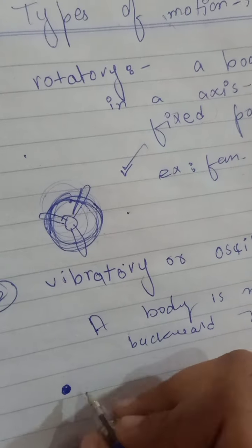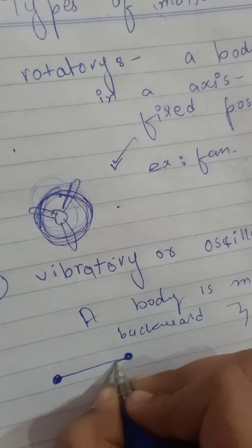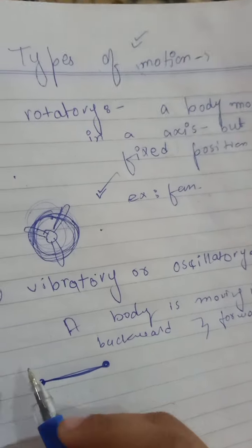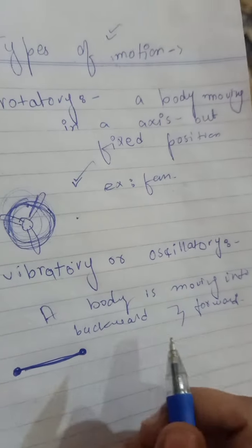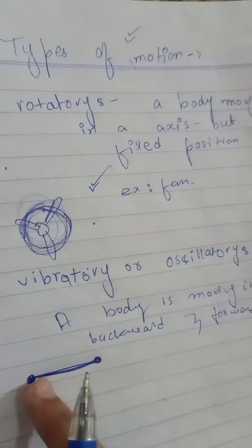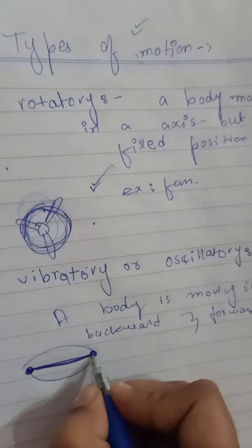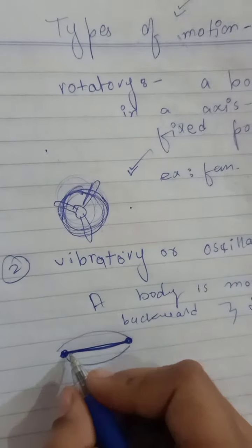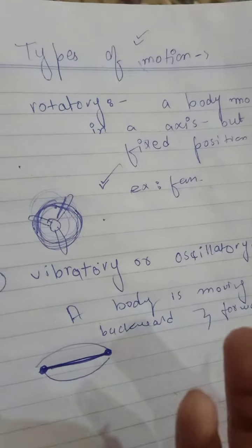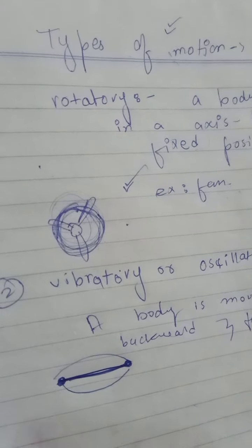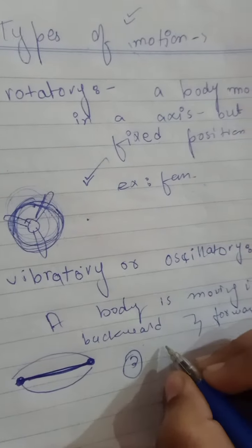In vibratory motion, a body moves forward and then comes back — it moves backward and forward but stays in a constant position. It is changing direction but not moving away from its fixed location. It goes from one point and comes back to that same point. That is called vibratory or oscillatory motion: a body moving backward and forward in a constant position.